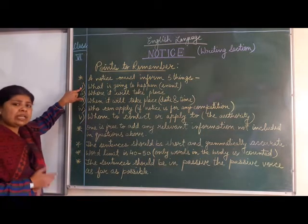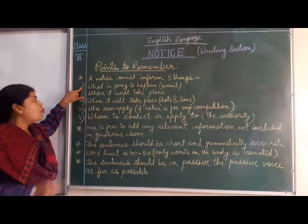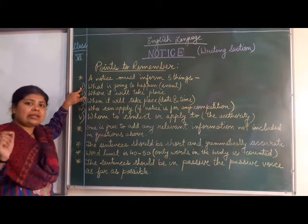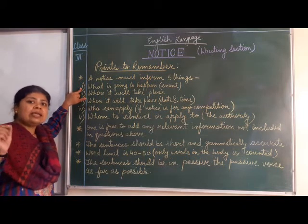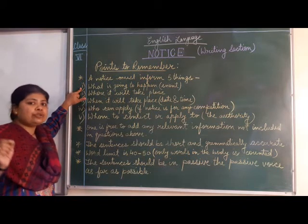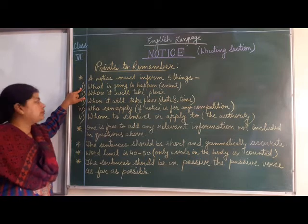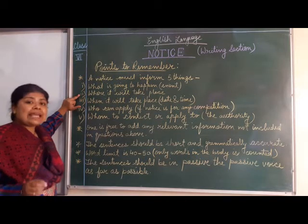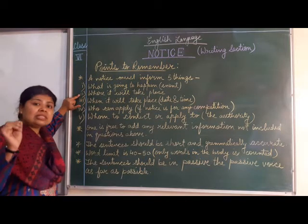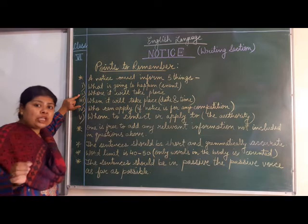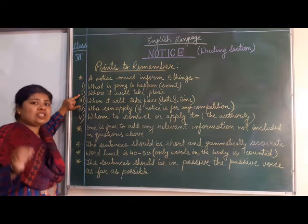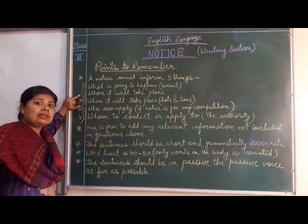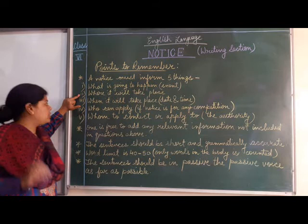The first one is: what is going to happen? Meaning, what is the exact event going to occur? The second is: where will it take place? That means the venue, the place of organizing the event.